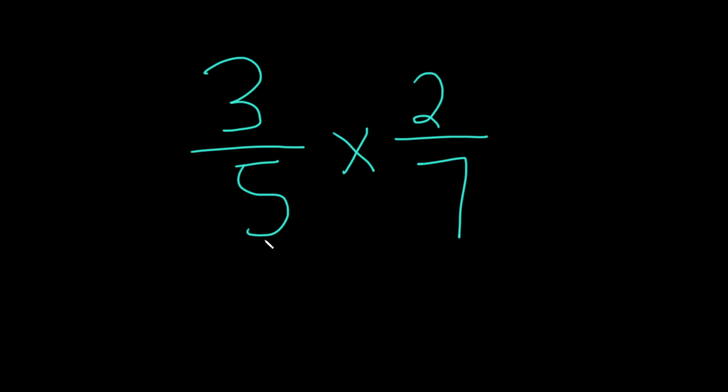So we can go ahead and perform the multiplication. To do that, you basically multiply straight across. So 3 times 2, these are the numerators, it's going to give you 6, and that goes upstairs in the numerator. And then multiply the denominators, 5 times 7, that's 35.